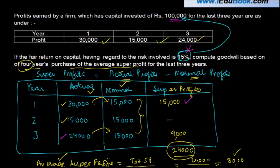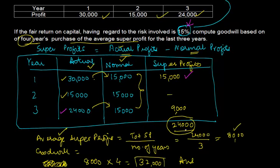Total super profits: 15,000 plus 9,000 equals 24,000. Total number of years: 3. Average super profits: 24,000 divided by 3 equals 8,000. Goodwill is 4 years purchase of the average super profit, so 8,000 multiplied by 4 equals 32,000.